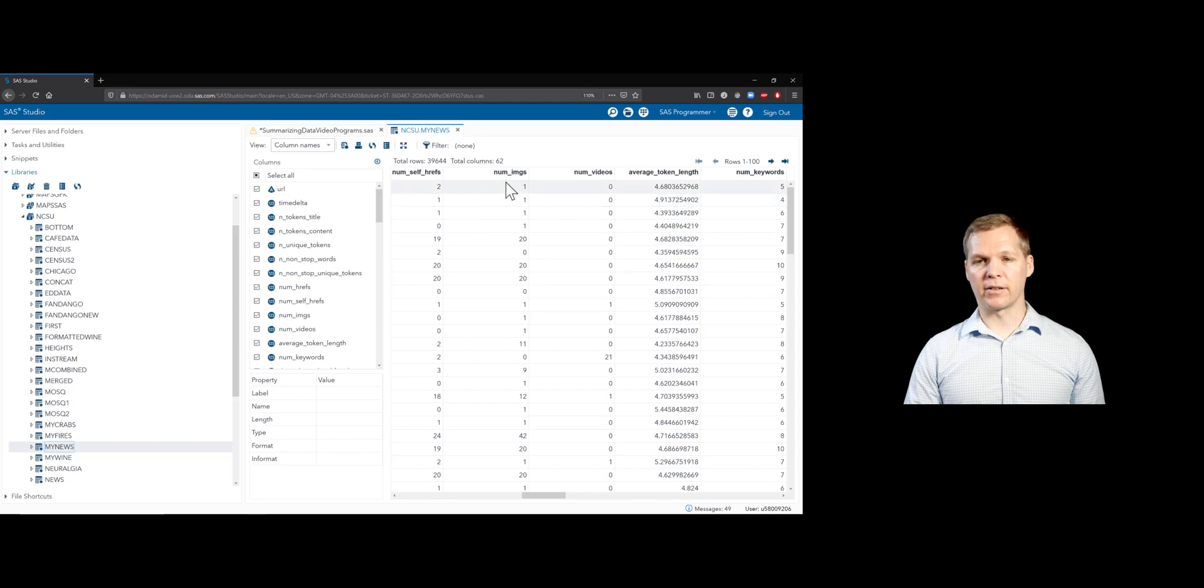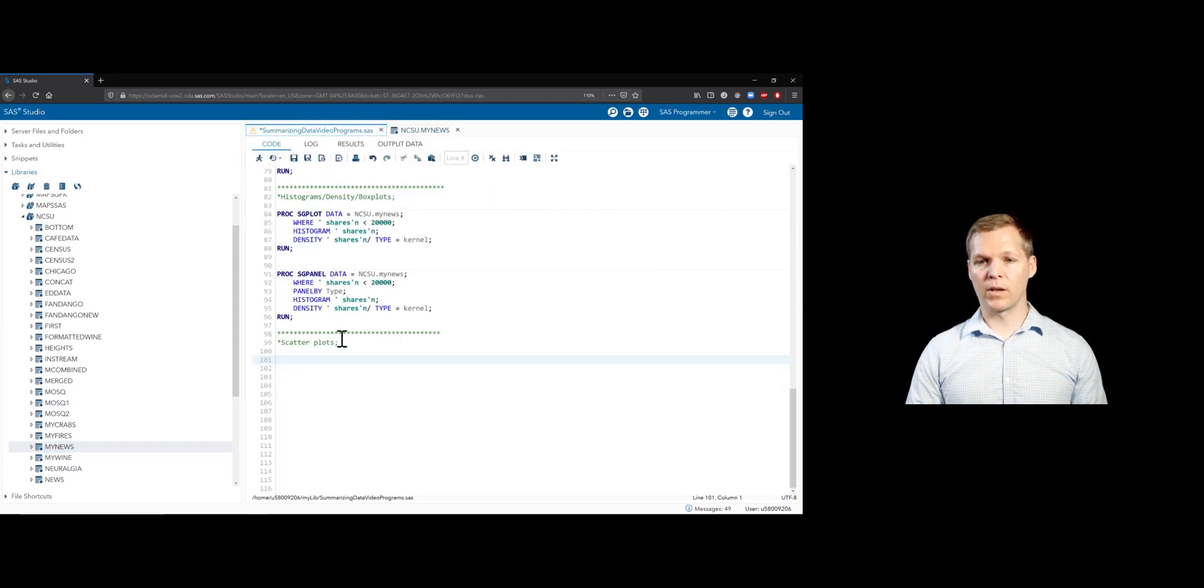So we'll use that as another numeric variable for our scatterplot, num images. We'll go ahead, I'll just go ahead and copy what we have up here, bring it down, since we're still using the SGPlot procedure. I'll get rid of that where statement.